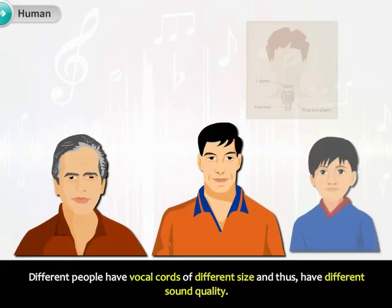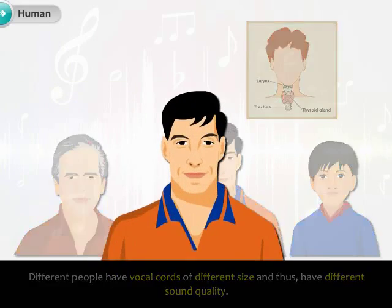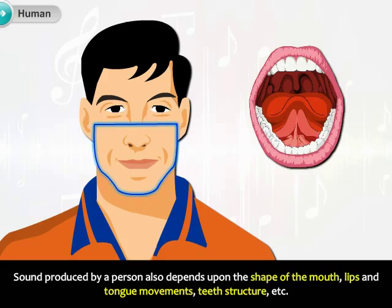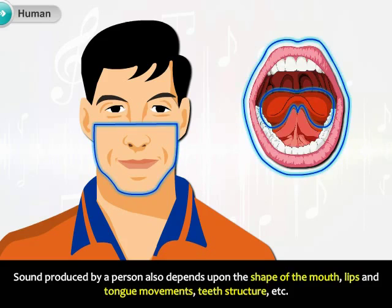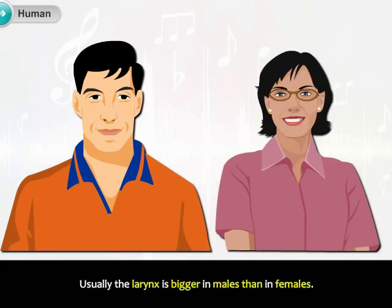Different people have vocal cords of different sizes, and thus have different sound quality. The sound produced by a person also depends upon the shape of the mouth, lips and tongue movements, teeth structure, etc. Usually, the larynx is bigger in males than in females.